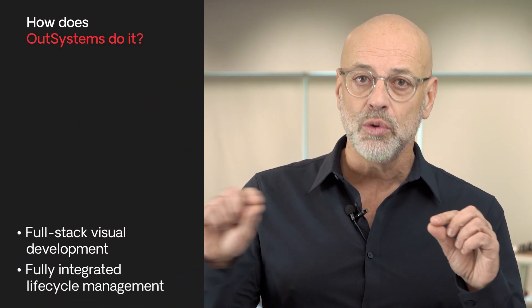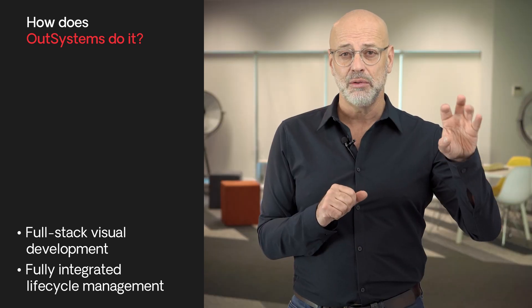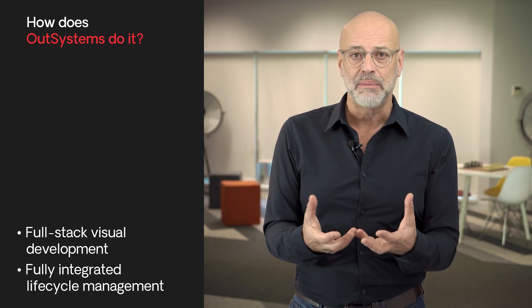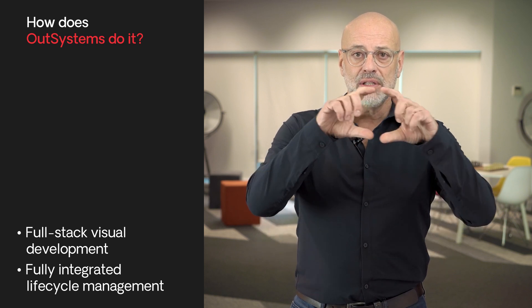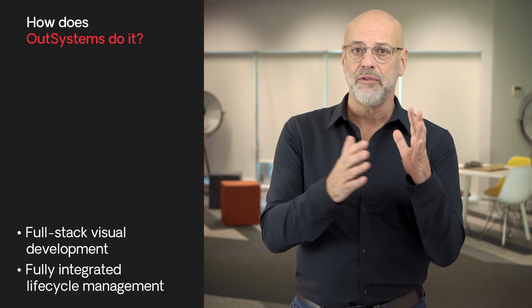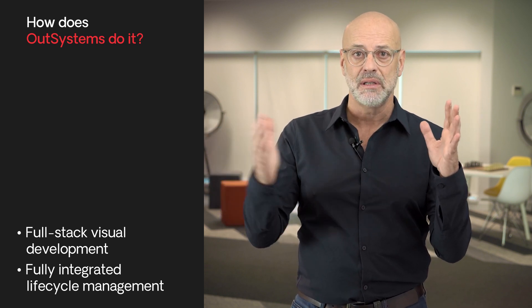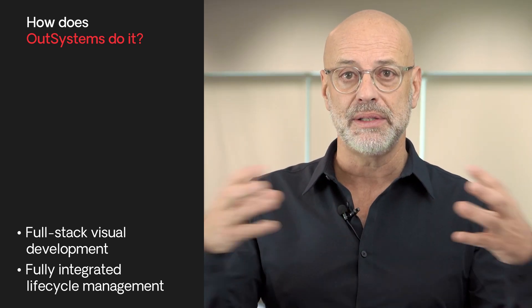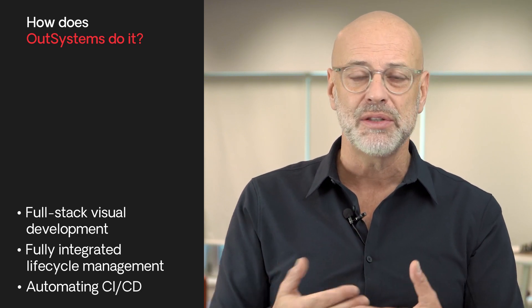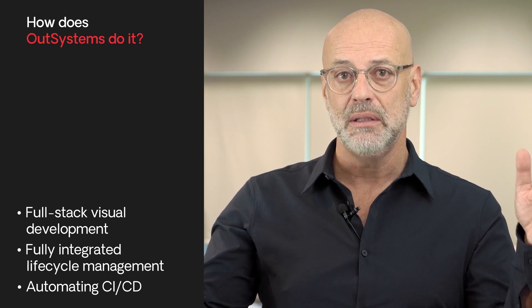The second capability is the fact that in OutSystems, from day one, we've realized it's not only about development. It's about the full lifecycle — from starting to develop a new feature until that feature is in the hands of users in the app they are operating. It's the full integrated lifecycle, which may comprehend from three to six to even nine phases total. What today are called CI/CD pipelines or DevOps — we automate this process completely.